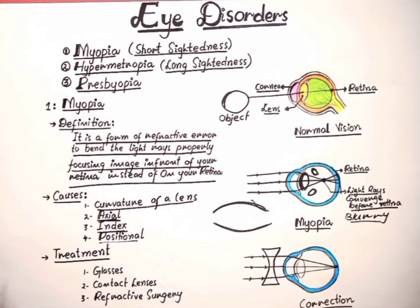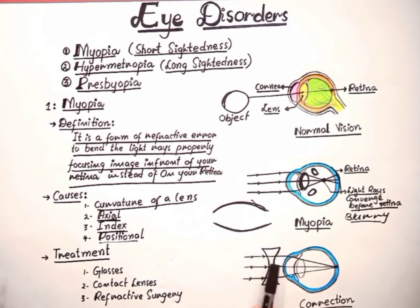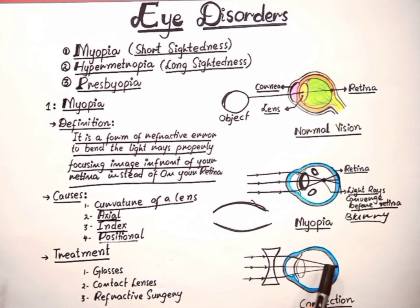How can we treat myopia? We can use eyeglasses, contact lenses, and refractive surgeries are also available. Here you can see a concave lens. When the light beams pass through this concave lens, a clear image will form on the retina — the image will focus correctly on the retina.